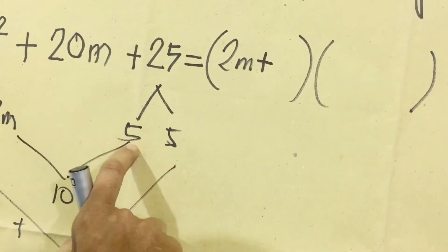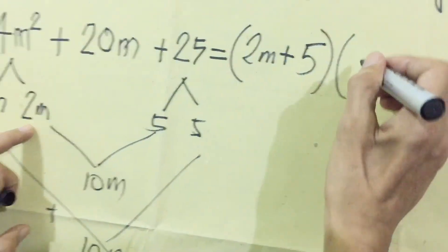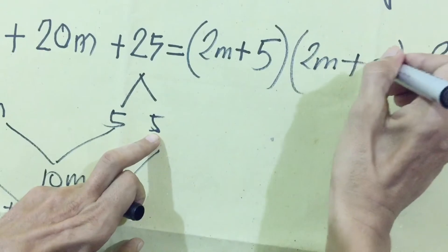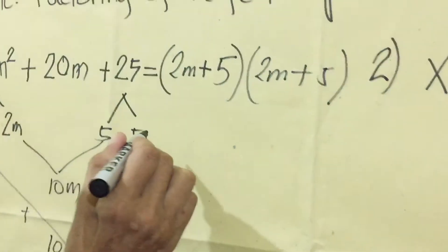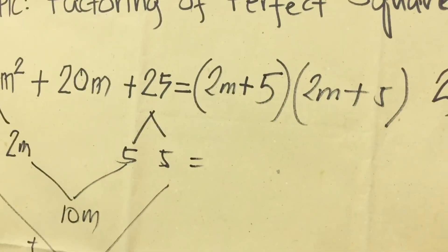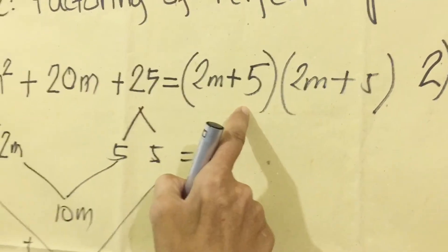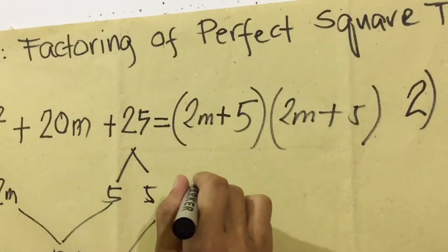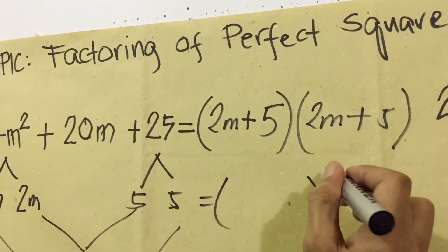We're going to write the other term for the second term here is 5, and the next term here is 2m, and also positive 5 because the middle term is positive. Now look at the result: the result is 2m plus 5, 2m plus 5. We're going to make this a square binomial.